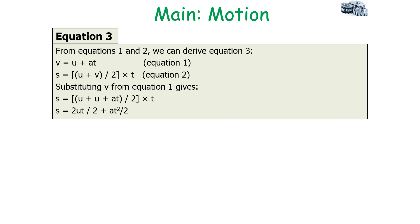From equations 1 and 2 we can derive equation 3. Taking equation 1, V = U + AT, and equation 2, S = ((U + V) / 2) × T, we substitute V from equation 1 into equation 2. This gives S = (U + U + AT) / 2 × T. Expanding outwards: 2UT/2 + AT²/2. The 2s cancel, giving us our third equation: S = UT + ½AT².